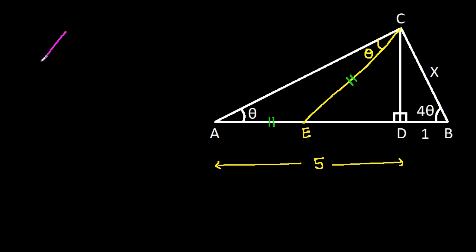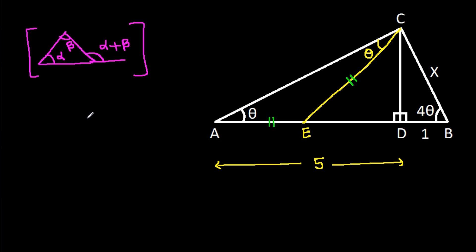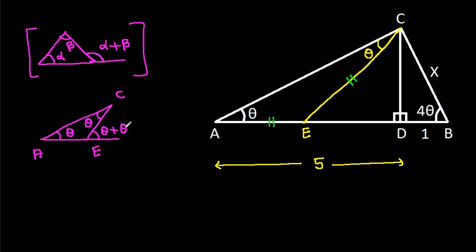Now, in a triangle, if this angle is alpha and this angle is beta, then the exterior angle will be alpha plus beta. So in triangle ACE, this angle is theta and this angle is theta, so the exterior angle will be theta plus theta, that will be 2 theta.